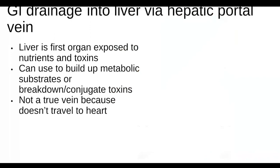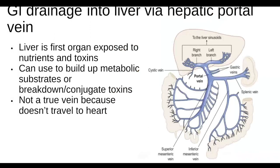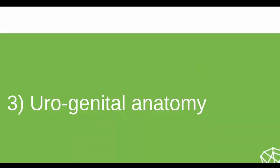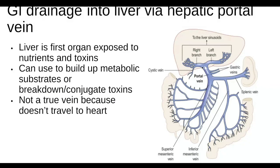All blood from the GI tract drains into the liver via the hepatic portal vein — a portal vein because it doesn't carry blood back to the heart directly. This allows the liver to use nutrients to create metabolic substrates and break down any toxins introduced into the body. The liver acts as the first major metabolic barrier for anything entering our body via the gut.